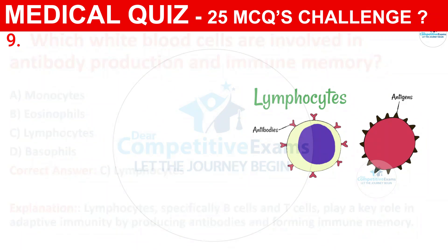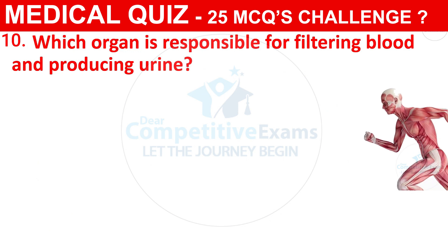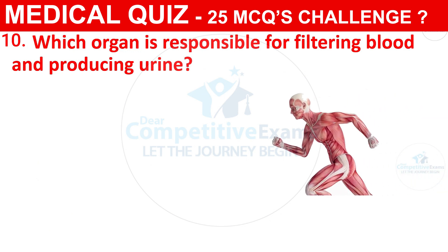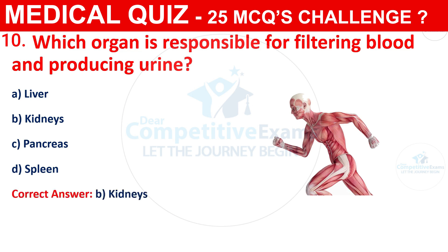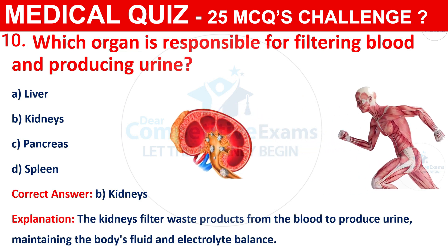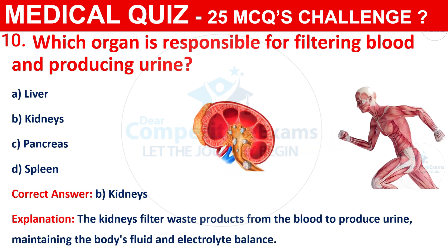Question 10: Which organ is responsible for filtering blood and producing urine? The options are Liver, Kidneys, Pancreas, or Spleen. The correct answer is B, that is Kidneys. The kidneys filter waste products from the blood to produce urine, maintaining the body's fluid and electrolyte balance.